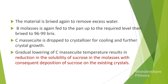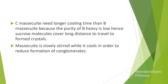C masecuite formed is dropped to the crystallizer for cooling and further crystal growth. Gradual lowering of C masecuite temperature results in reduction in the solubility of sucrose in the molasses with consequent deposition of sucrose on the existing crystals. C masecuite needs longer cooling time than B masecuite because the purity of B molasses is low; hence, sucrose molecules must travel a longer distance to reach the formed crystals. C masecuite in the crystallizer is slowly stirred while it cools in order to reduce formation of conglomerates.